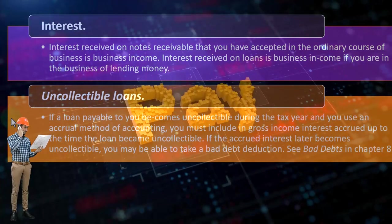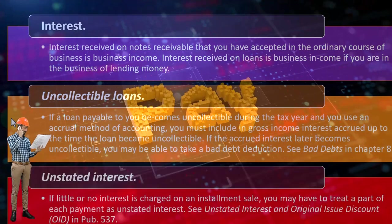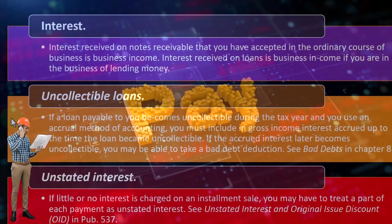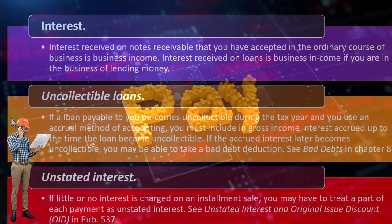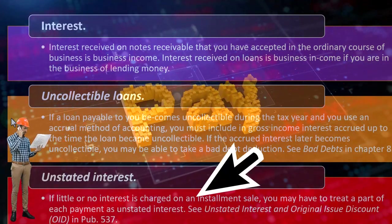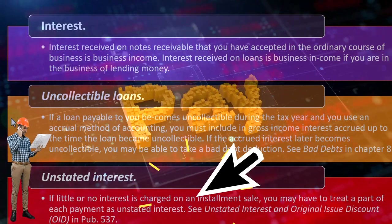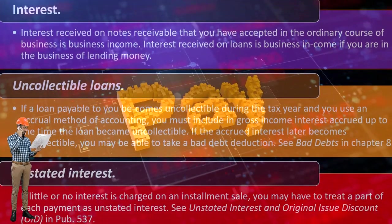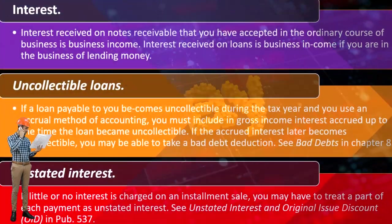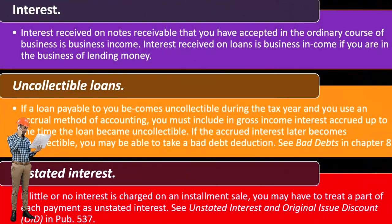If interest is involved in a loan that someone owes you, the interest would be accruing up until the point that you don't expect to get paid — that interest would be income to you as it accrues. If you don't think it's going to get paid, then you have that same kind of bad debt situation with the interest as well.